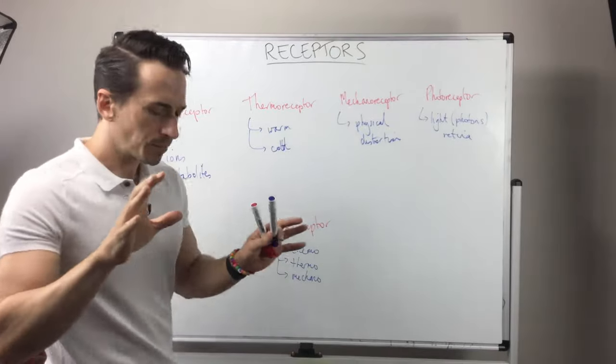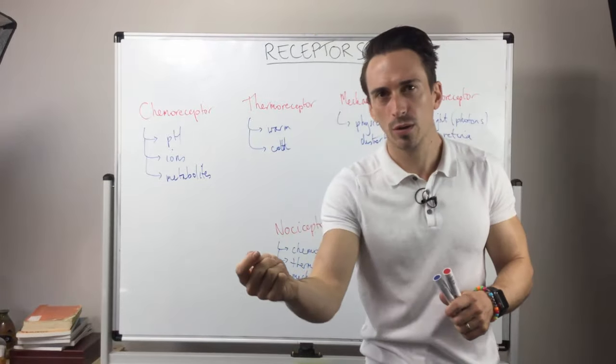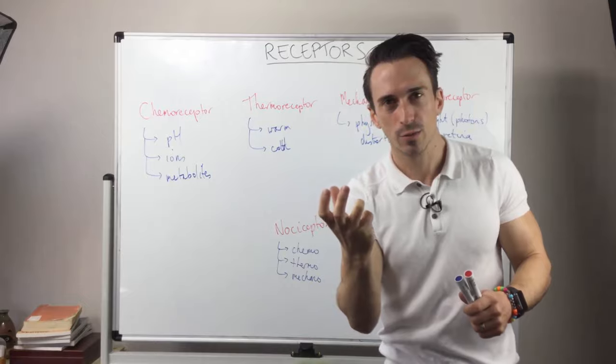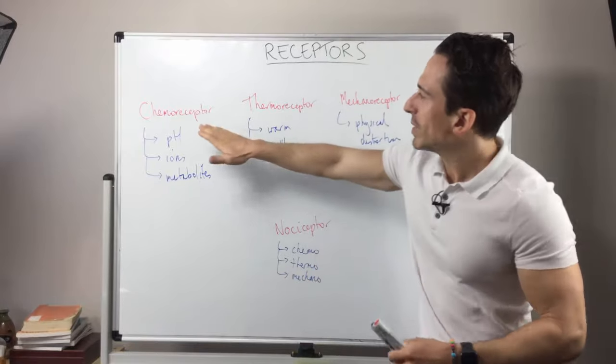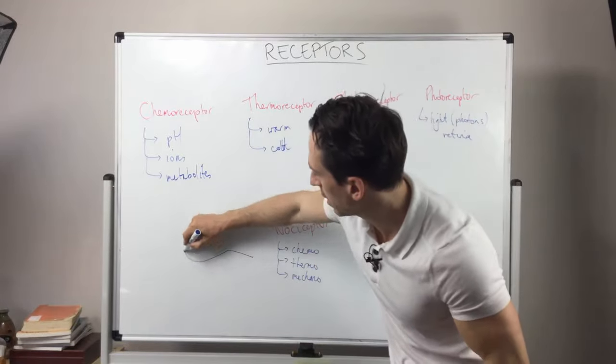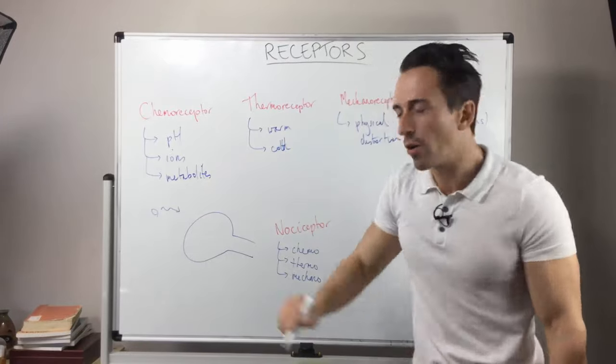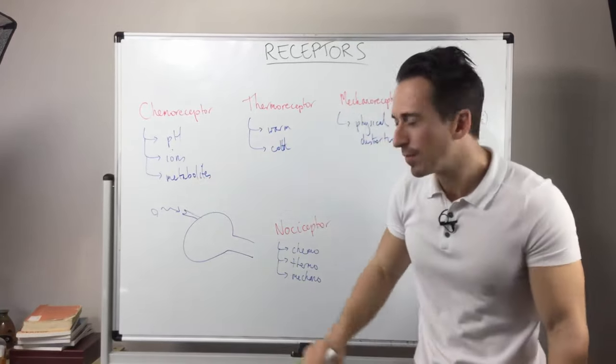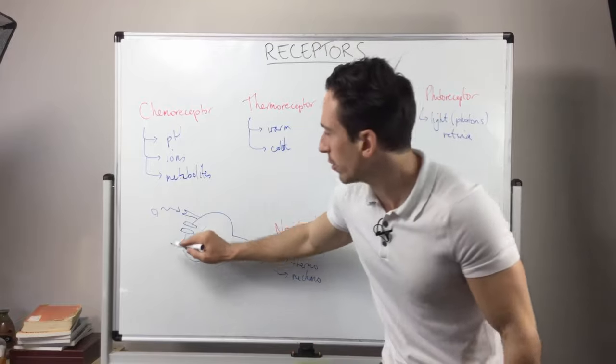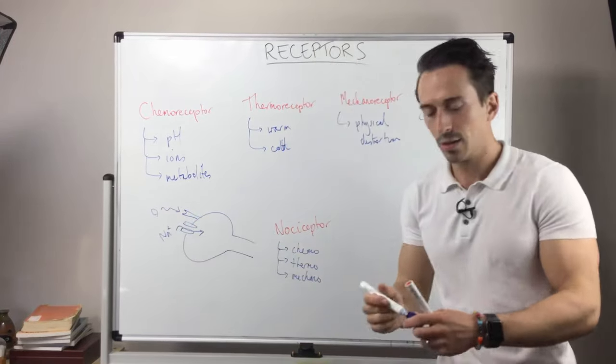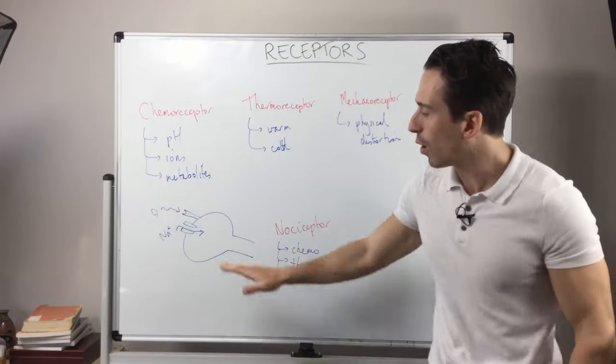Now the next thing we want to talk about is how do these different types of receptors turn a very specific stimulus into a nervous response. How does it turn all of these into an electrical impulse? When it's a chemoreceptor, you're going to have a particular type of nerve ending, and when a particular chemical comes along it's going to bind to certain receptors. What it's going to do is modify the membrane's ability to open up channels, and it's going to open up certain ion channels to let the ions move through, turning a chemical signal into an electrical signal or an action potential.